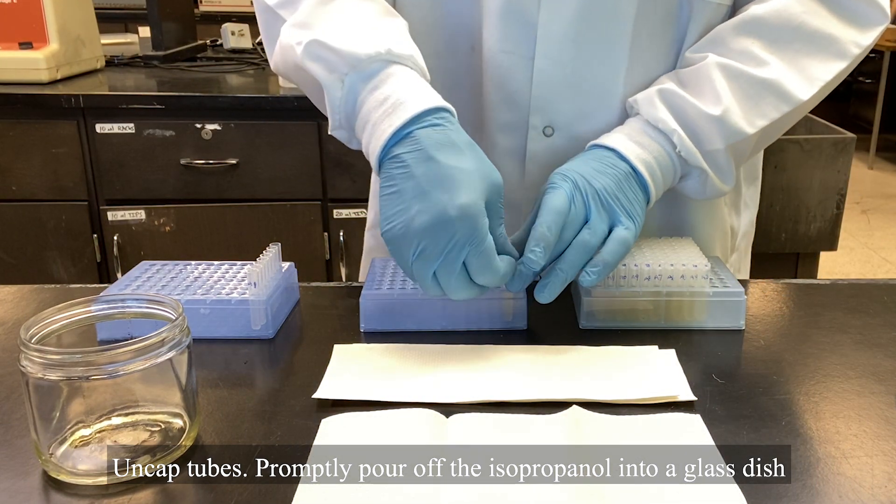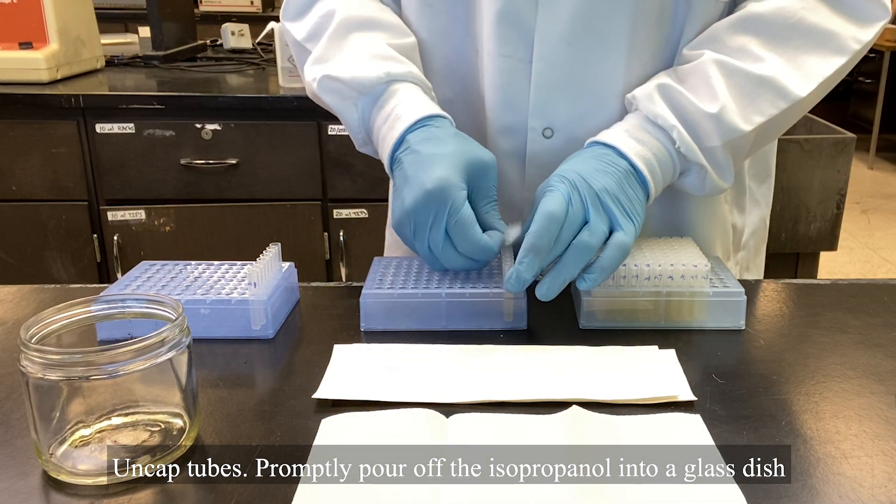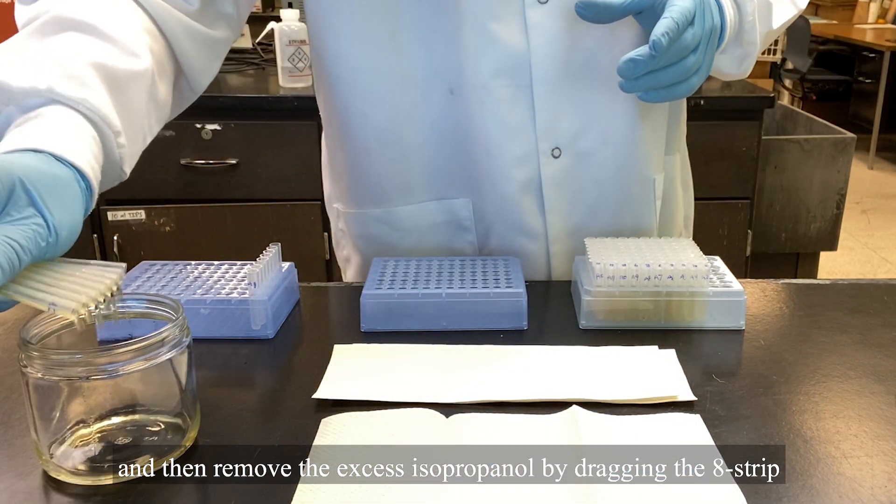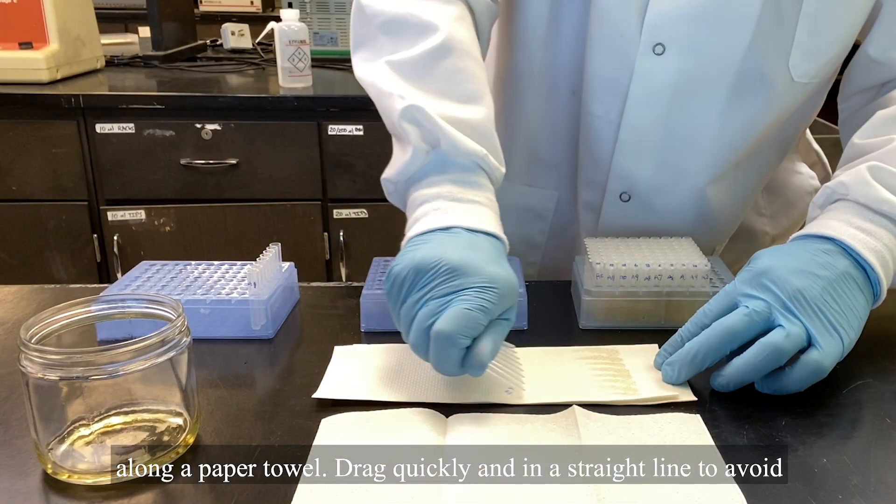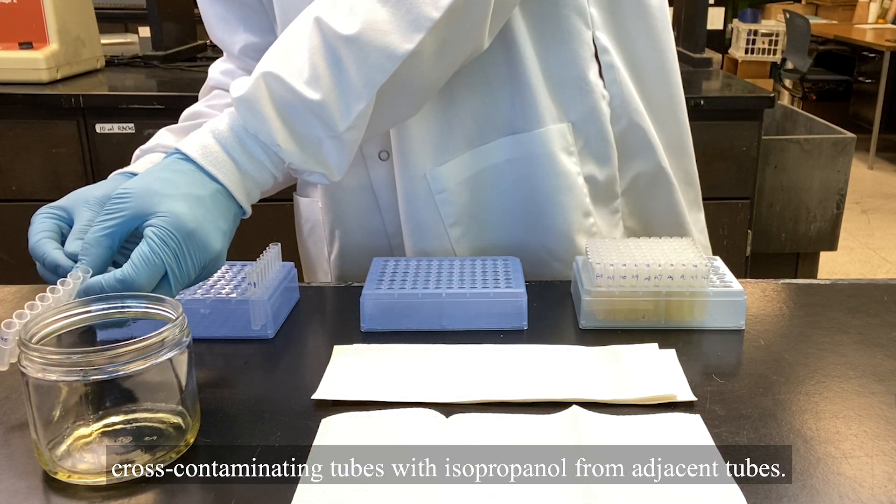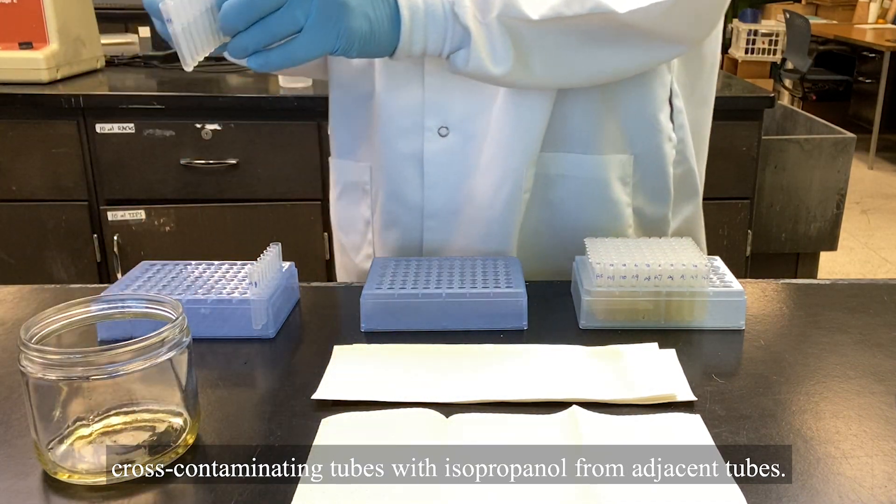Uncap tubes. Promptly pour off the isopropanol into a glass dish and then remove the excess isopropanol by dragging the H strip along a paper towel. Drag quickly and in a straight line to avoid cross-contaminating tubes with isopropanol from adjacent tubes.